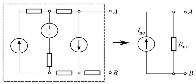Calculate the output current IAB with a short circuit as the load, meaning zero resistance between A and B. This is ENO.